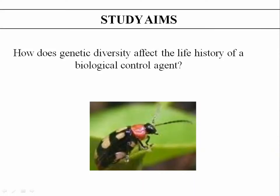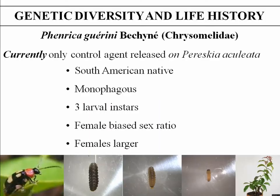My study wanted to investigate genetic diversity and its effects on life history within a biological control agent. To do this we used Fenrica, the biological control agent Sparsecia culiata, which Ian Patterson spoke about yesterday. It's currently the only control agent released against Sparsecia.